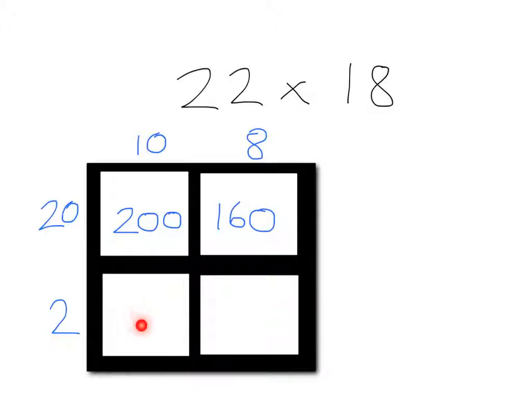Next, in this box, you would multiply the 2 by 10, which is simple enough, 20. And next, in this box here, you would multiply 2 by 8, which gives us 16.